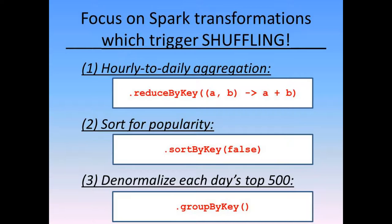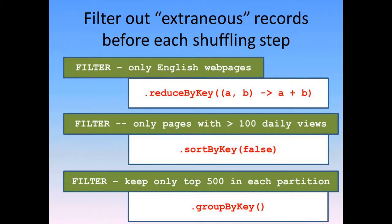But one thing that I did proactively do was to add filters at intermediate points to remove extraneous records and reduce the quantity of data that had to be processed and shuffled. I decided at the beginning to filter for only English Wikipedia pages. Then, before the popularity sort, I kept only pages with more than 100 views. And, before the final concatenation with group-by-key, I kept only the top 500 pages in each partition.